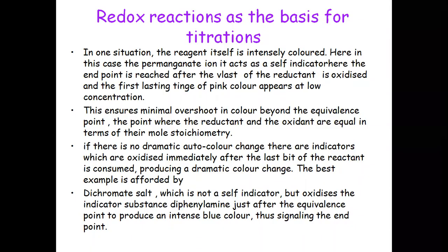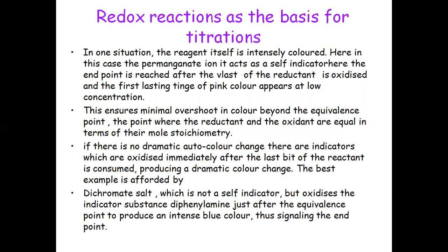Redox reaction is the basis for titration. Titration is used to find out the strength of acids and bases by noting the reading at which the color change occurs. In one situation, the reagent itself is intensely colored — here the permanganate ion acts as a self-indicator. The endpoint is reached after the last of the reactant is oxidized and the first trace of pink color appears, even at low concentration, drop by drop. This ensures minimal overshoot in color beyond the equivalence point, where the molar stoichiometry of the reactant and oxidant becomes equal.